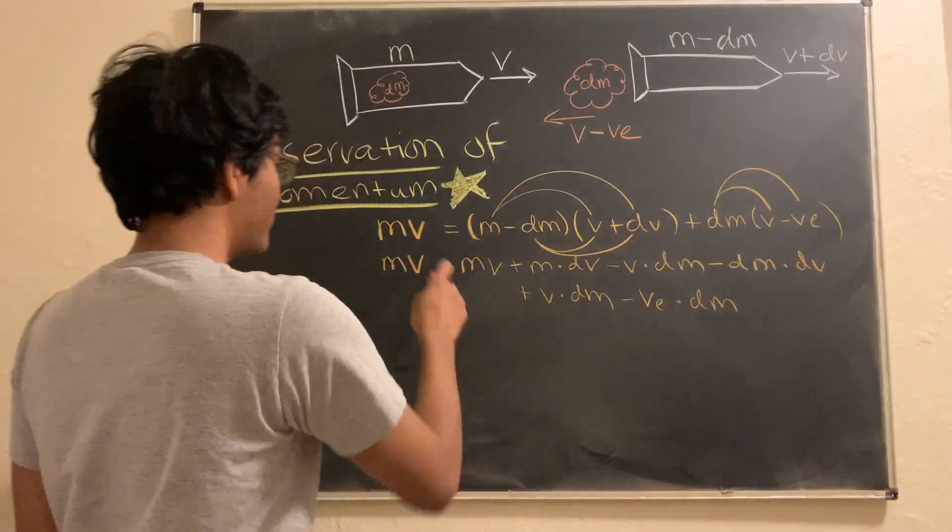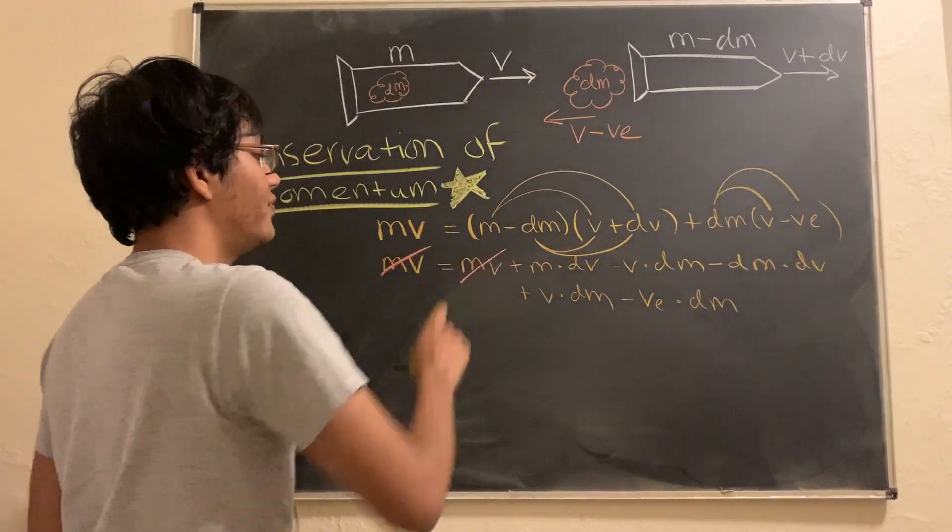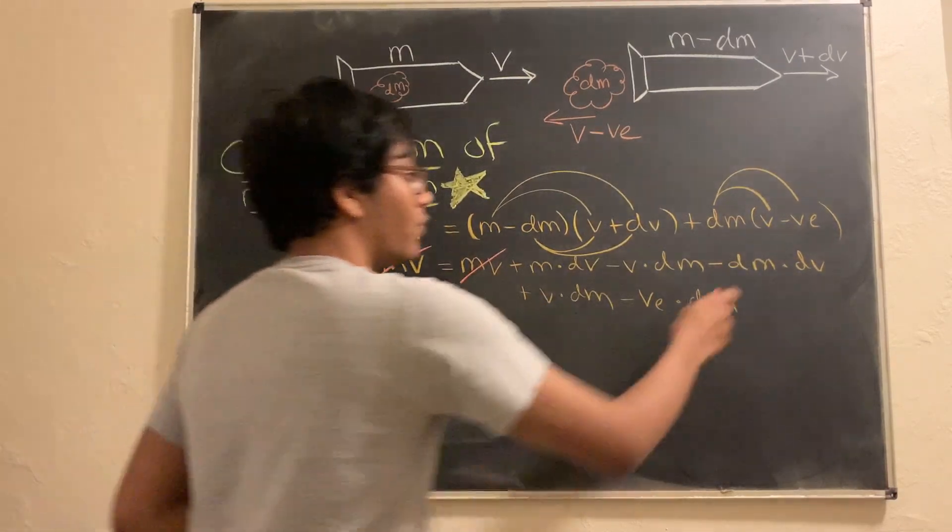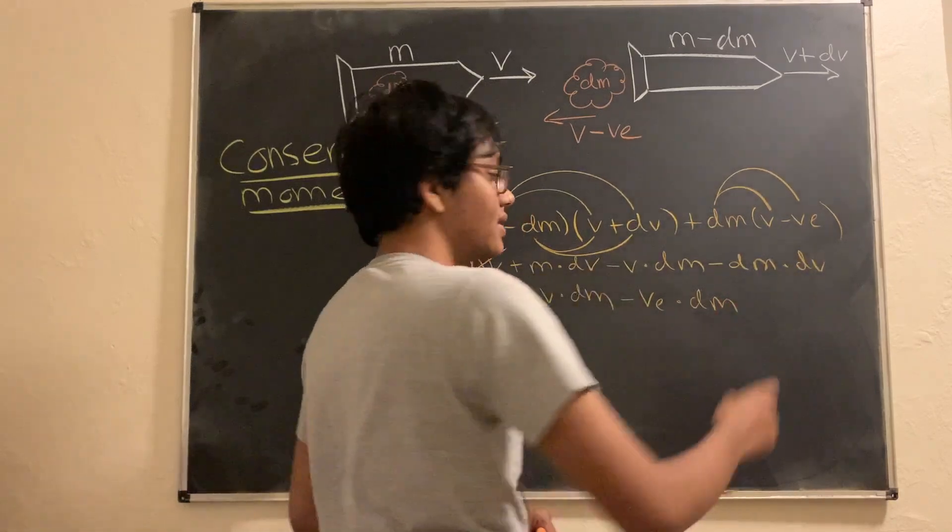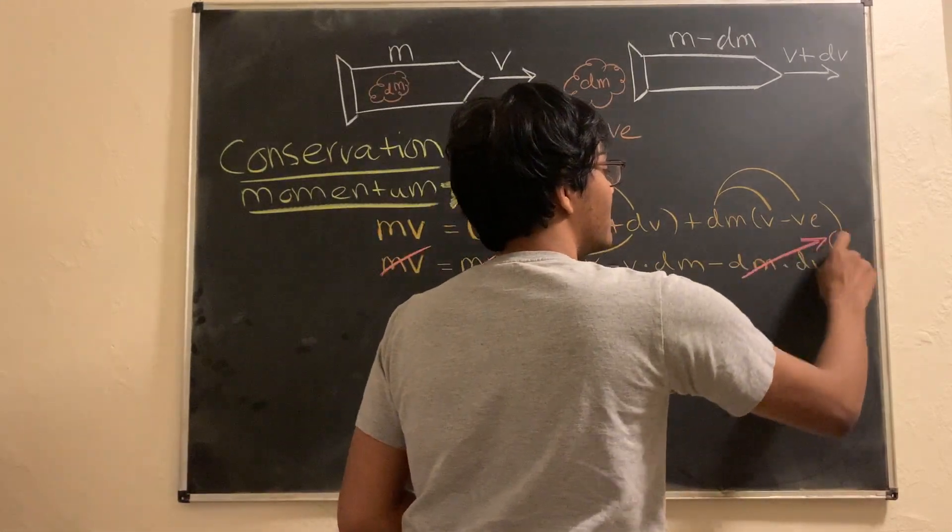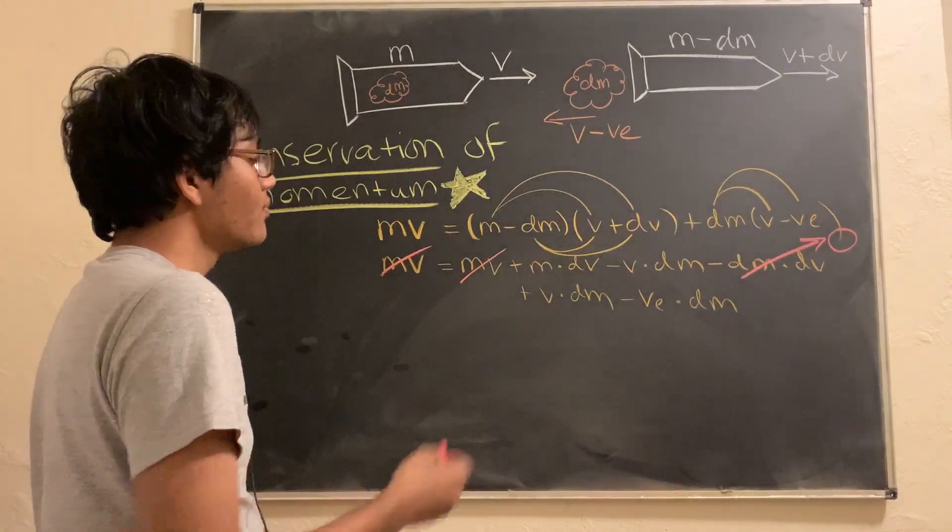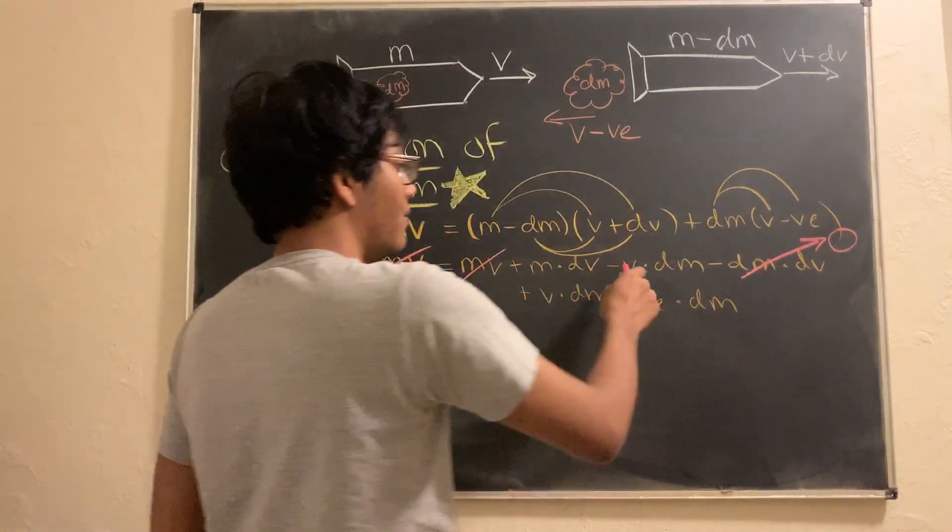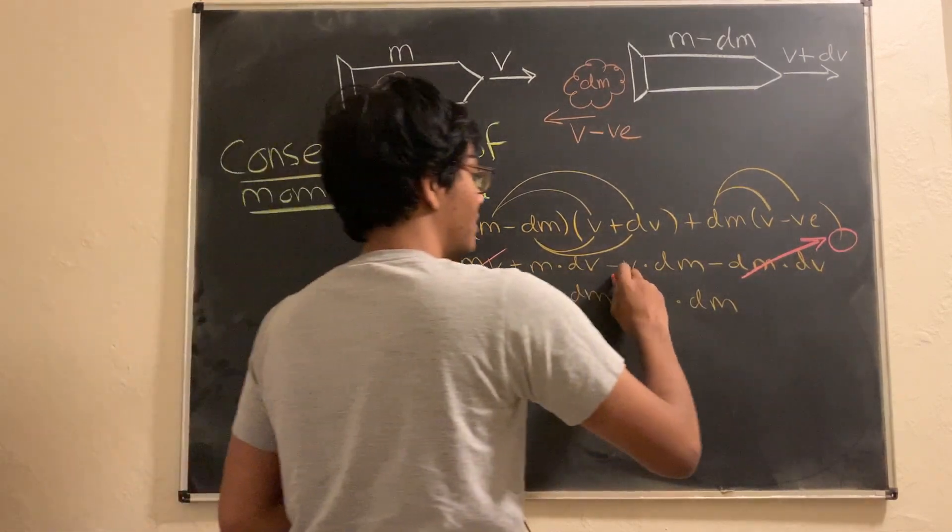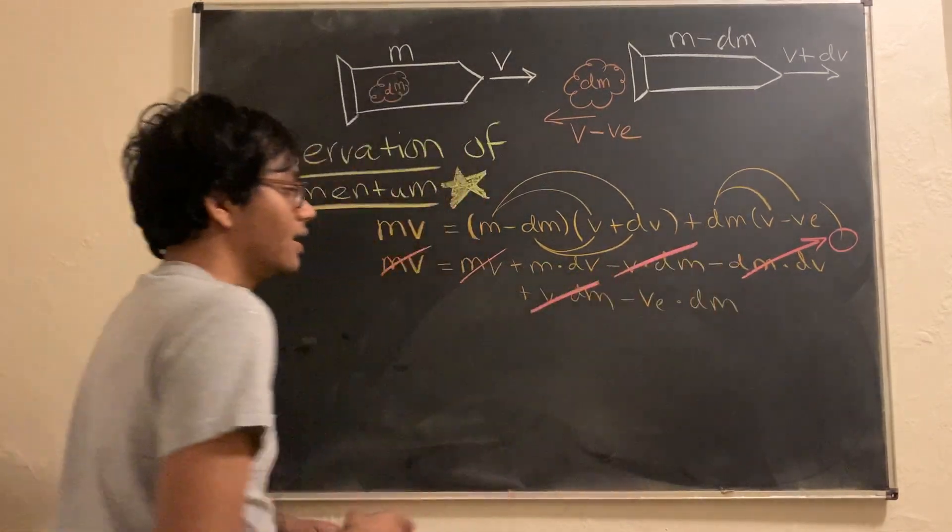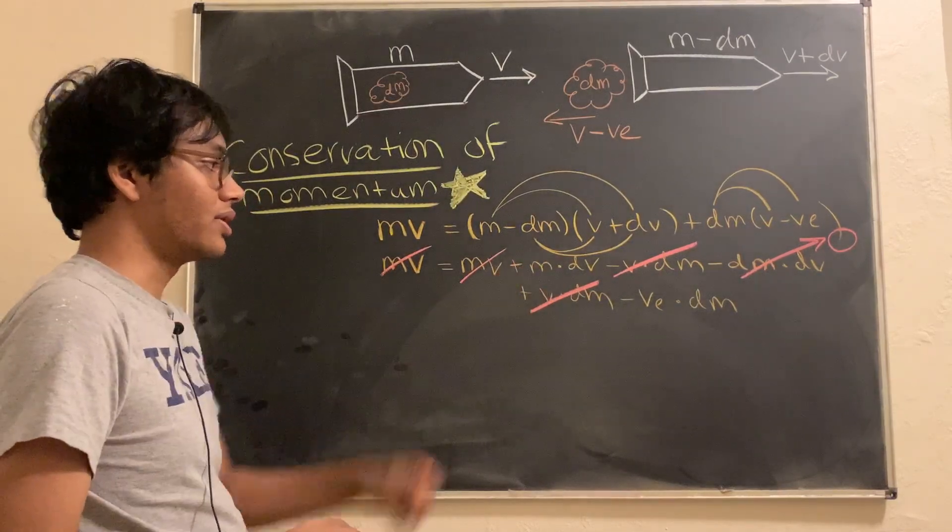It's time for cancellation. First things first, MV and MV cancel out. When you multiply something very small, dm and very small velocity dV, that's essentially zero. We can approximate that. We have minus V dm plus V dm. Those things are going to cancel out.